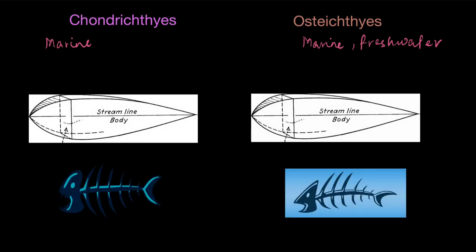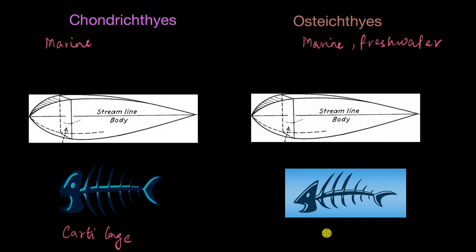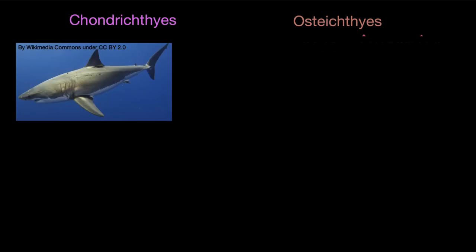If you look at their skeletons, the Chondrichthyes have a cartilaginous skeleton — their skeleton is made of cartilage. 'Chondro' means cartilage and 'osteo' means bone, so the skeleton in Osteichthyes is made of bone.